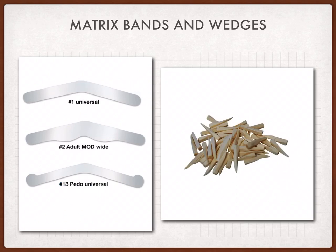The next step is to place a matrix band and a wedge, which is done only for Class II preparations, so that we do not injure the adjacent tooth. We generally have three types of bands: the universal band, the adult MOD band, and the pedo universal band.